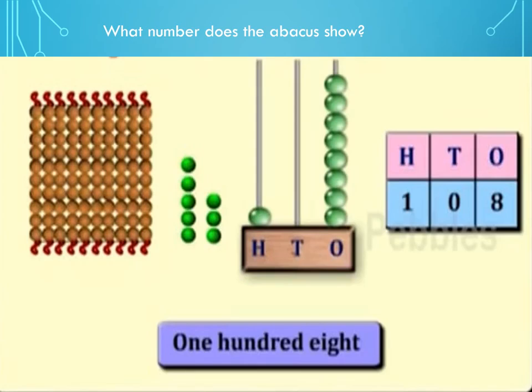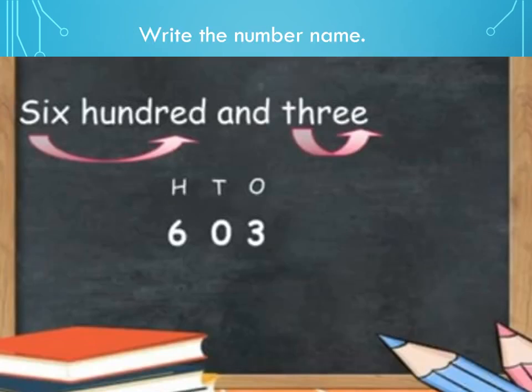Now come to next topic: how to write the numbers name. Here we have a number six hundred and three. Students look, 6 is in the hundreds, 0 is in the tens, and 3 is in the ones, so it will be 603.